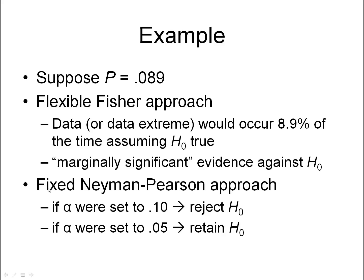In contrast, the fixed Neyman-Pearson approach would be if we had set an alpha threshold of 0.10, since the p-value is less than that, we would be compelled to reject the null hypothesis. On the other hand, if we had set an alpha threshold of 0.05, we would be compelled to retain the null hypothesis.